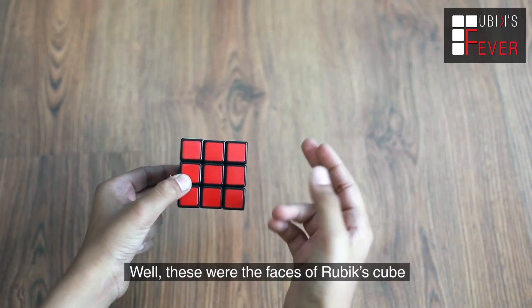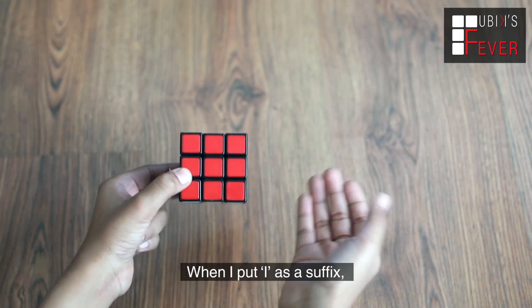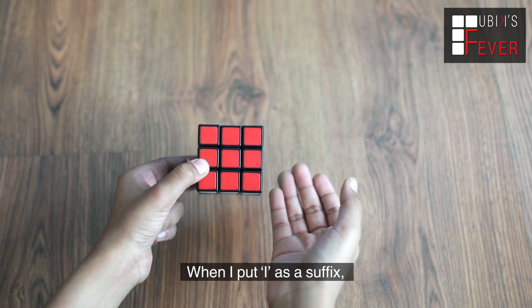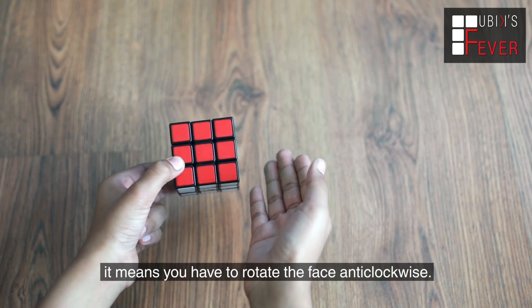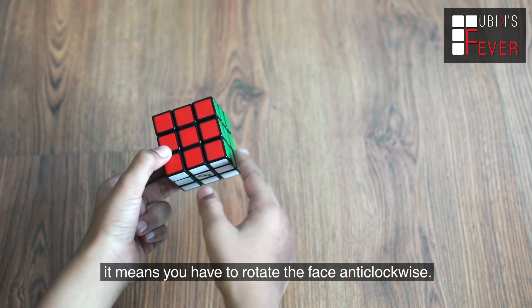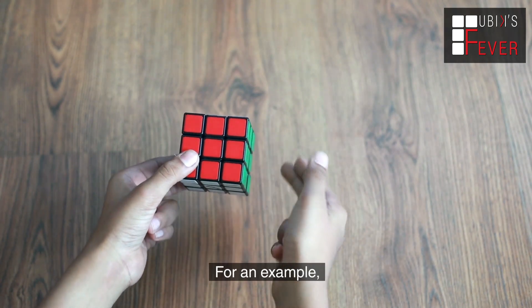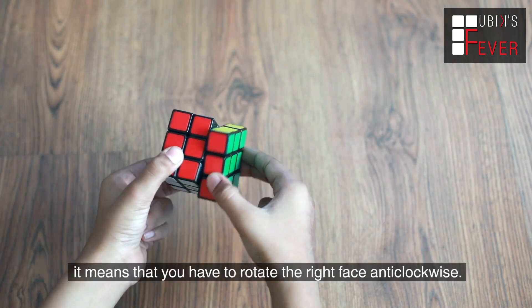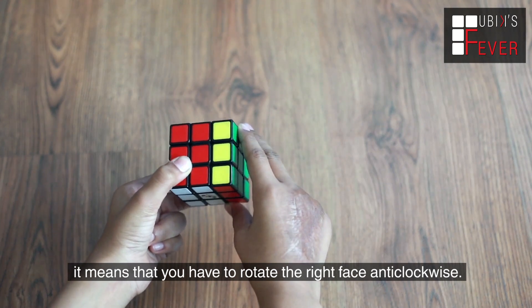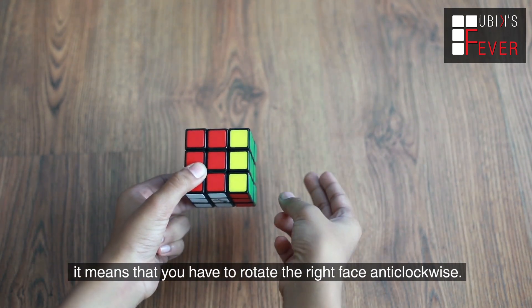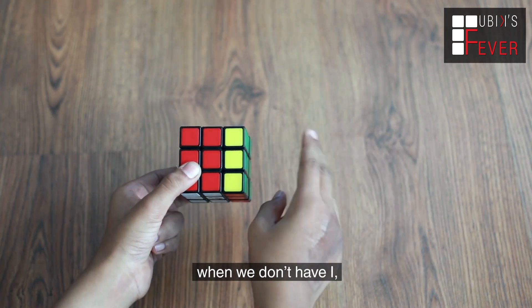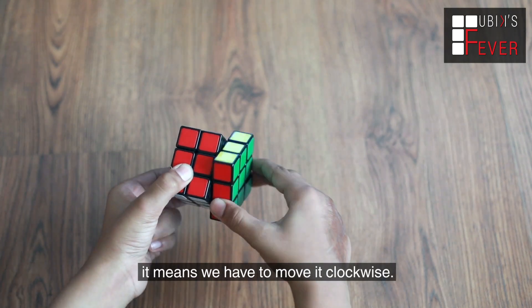When these were the faces of Rubik's cube, when I put I as a suffix, it means you have to rotate the face anticlockwise. For an example, when I say RI, it means you have to rotate the right face anticlockwise. When we don't have I, it means we have to move it clockwise.